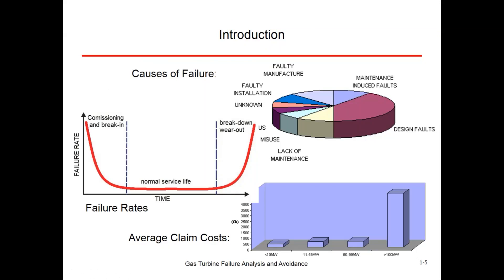This is the classic bathtub curve — the shape is somewhat hypothetical, but we see a series of high failures associated with commissioning and break-in, where you capture faulty manufacturing, assembly, and installation failures. The engine eventually settles down and runs its normal service life at a very low probability of failure, and then as things break down and wear out, the probability of failure starts to go up again. Ideally, you want to do some kind of maintenance interaction in about the middle of the curve so that you can correct worn-out parts and get new parts in the machine, so you don't start to climb the end of the bathtub curve.